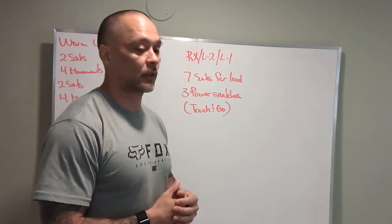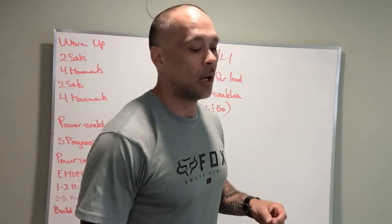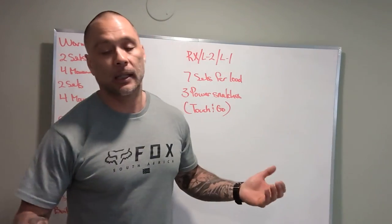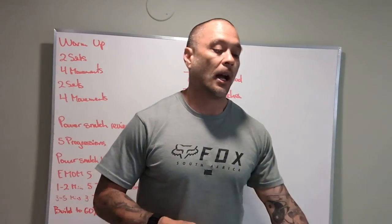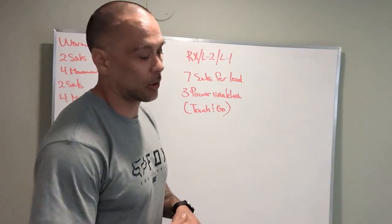Scaling options for this workout: number one, if we're injured, shoulder injury, can't go overhead, 3 touch and go power cleans will work. Or we can do a dumbbell snatch with your one arm, and we'll do that 3 touch and go reps as well.